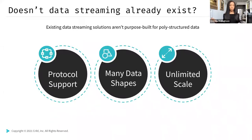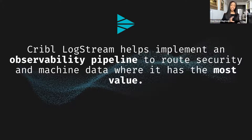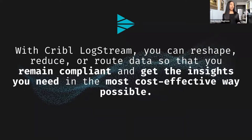The data you need probably exists in multiple sources with different protocols that dictate how that data is generated and collected. You've likely got data coming in a variety of formats that may not always match the formats required by the tools you use. You probably also come across streaming solutions that just couldn't scale with your business requirements. Cribble Logstream can — we've tested it at over 20 petabytes of data a day. Logstream is an observability pipeline to route security and machine data where it has the most value, helping slash costs, improve performance, and get the right data where it's needed in the formats required.